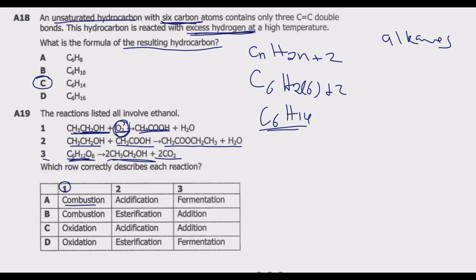Reaction one is combustion or oxidation, which is the gain of oxygen by a substance. Reaction two is esterification, so acidification is out. A is out and C is out; we remain with B and D. The third one is fermentation, which is the process by which sugars such as glucose are converted into ethanol and carbon dioxide by yeast in the absence of air. You notice it is not addition, so D is the correct answer.